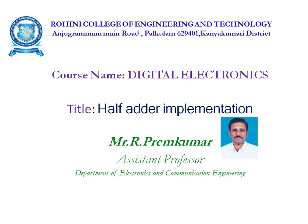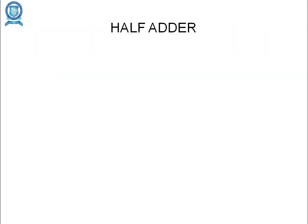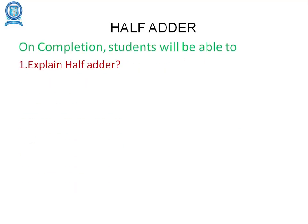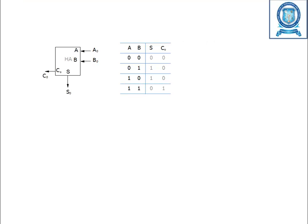Half adder implementation. On completion, students will be able to explain the half adder. A half adder adds two binary numbers, A and B, together. The outputs are sum and carry.